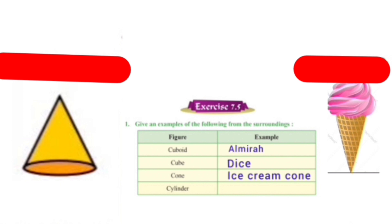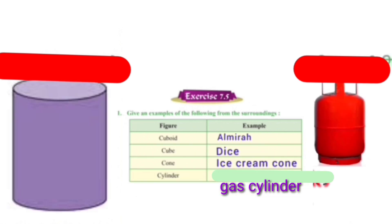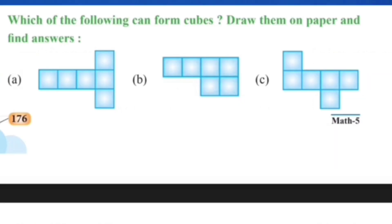The next one is cylinder. The example of cylinder is a gas cylinder that we use at our homes. Now, we will do question number 2 of exercise 7.5. The question is: which of the following can form cubes? Draw them on paper and find answers.